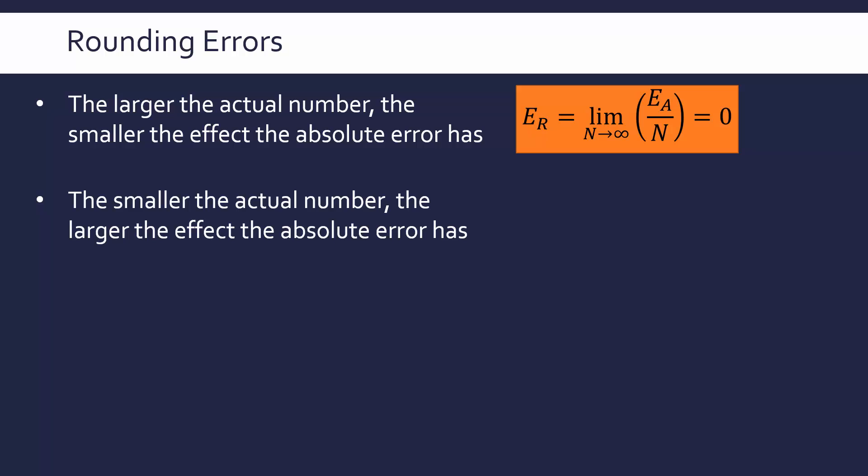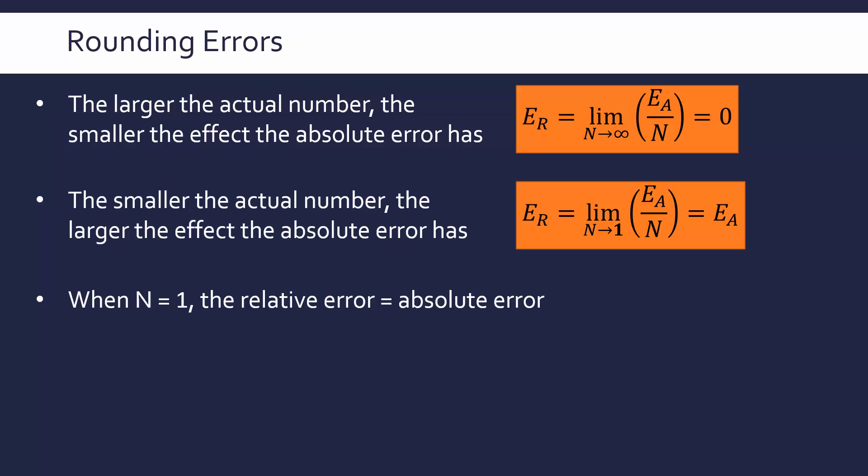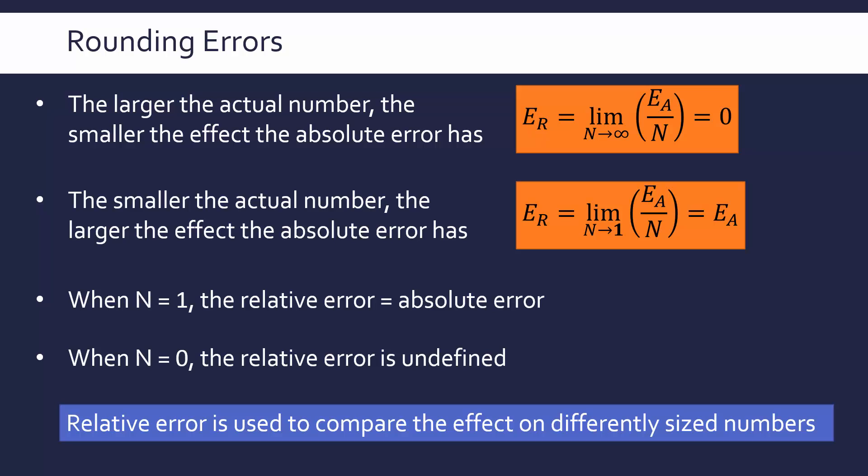And the opposite is true. So the smaller your number is, the larger the effect the absolute error has. That's why it's crucial to calculate our relative error, because otherwise we've got no real sense of whether the error is an issue or not. And here again, similar notation, as n tends towards one, so it tends towards a small number, it equals our absolute error. So that means it's more and more of a problem. So what we can take from this is, when n is one, our relative error is going to equal our absolute error. And of course, when n is zero, because we are dividing by zero in that case, we'd have an undefined relative error. And the takeaway from this is, if we want to compare the effect of rounding errors on differently sized numbers, we really need to calculate the relative error, because otherwise, an absolute error is not very useful. We can't make comparisons unless we look at it versus the size of our number trying to be represented.